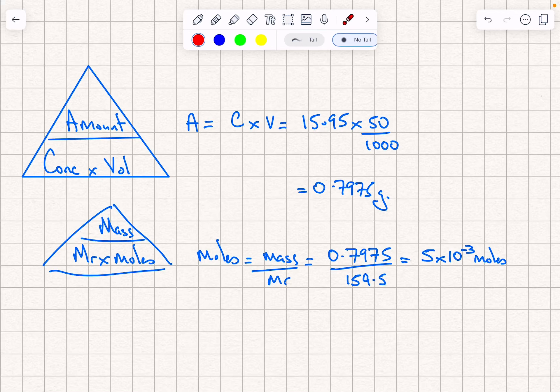So this calculation is a two-step calculation. The first triangle we're using is amount, concentration, volume. We're going to find the amount, so amount is concentration times volume. The concentration we're told is 15.95, the volume is 50 centimeters cubed, but we have to divide that by a thousand to convert to decimeters.